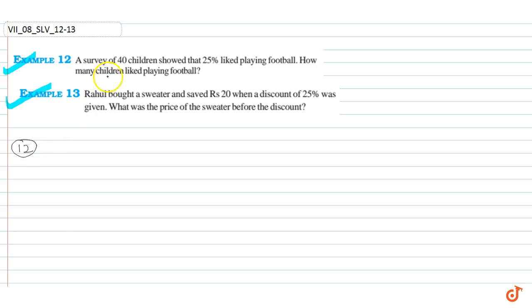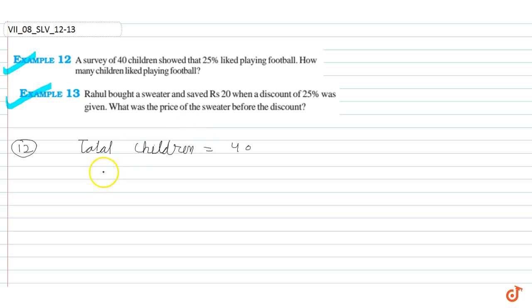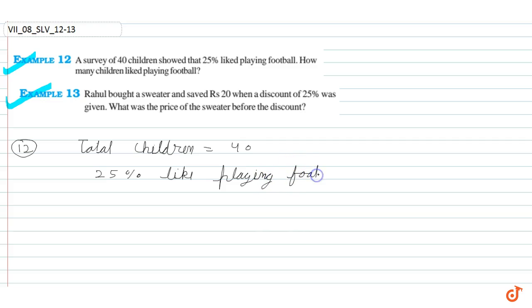In example number 12, a survey of 40 children showed that 25% like playing football. So how many children like playing football? Total children is equal to 40, and out of these 40 children, 25% like playing football.